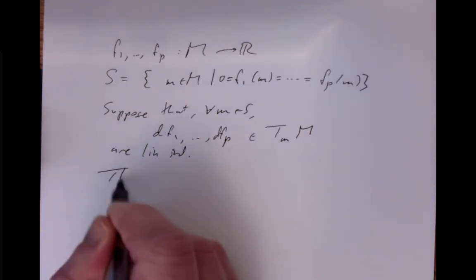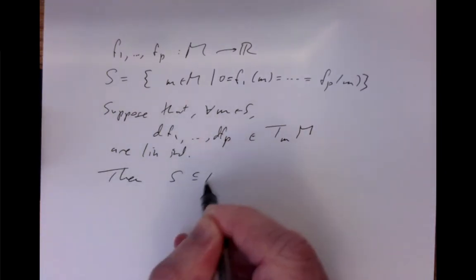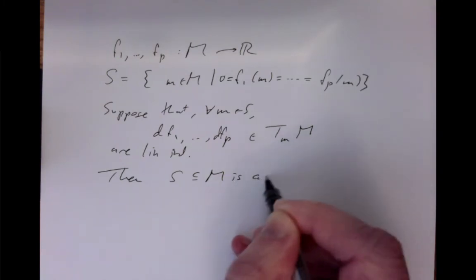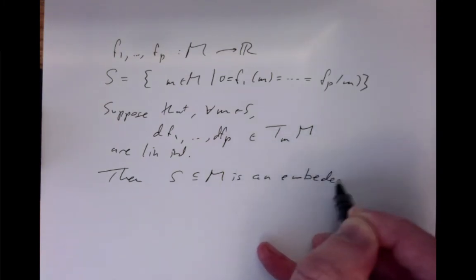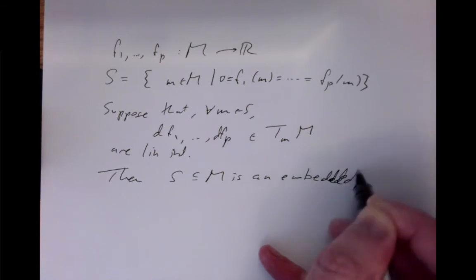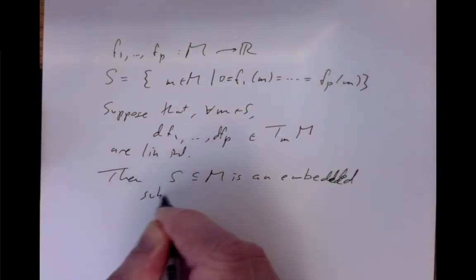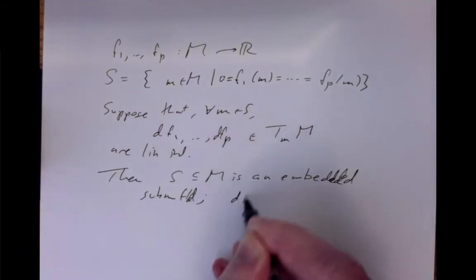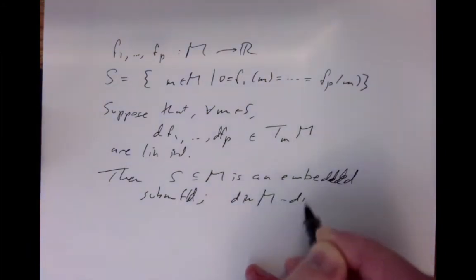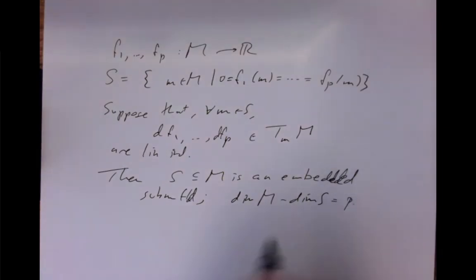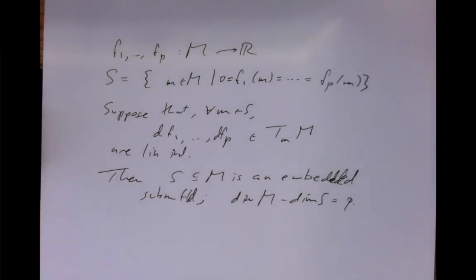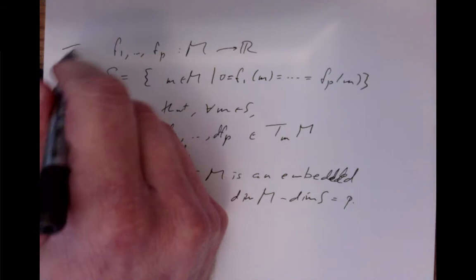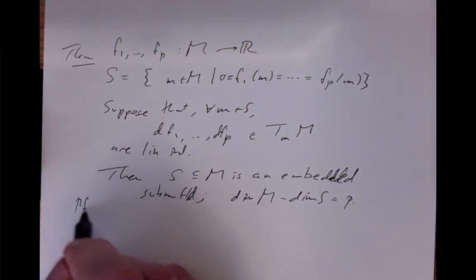Then, in fact, that set S is an embedded submanifold. Its dimension is dim(M) minus the number of functions p. So it's cut out by p functions, and that cuts down the dimension by p. This is a theorem, but it's a very elementary theorem to prove.